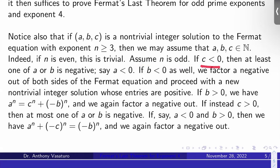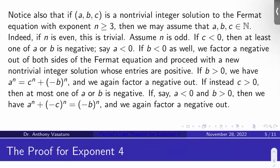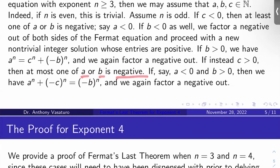Now assume n is odd. If c is negative, at least one of a or b is negative — let's say a is negative. If b is negative as well, then all three entries are negative, so we can factor a negative out of both sides of the Fermat equation and proceed with a new non-trivial integer solution whose entries are positive. If instead b is positive, then I have c negative, a negative, b positive, so I can rewrite the Fermat equation as a to the n equals c to the n plus negative b to the n (because n is odd), and again factor a negative out of each side. The only other possibility is that c was positive to start with, and then at most one of a or b is negative. Say a is negative and b is positive; then rewrite as a to the n plus negative c to the n equals negative b to the n, factor a negative out of both sides, and proceed with a non-trivial integer solution with all positive entries.